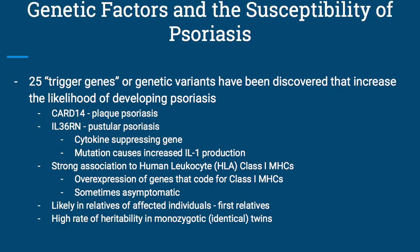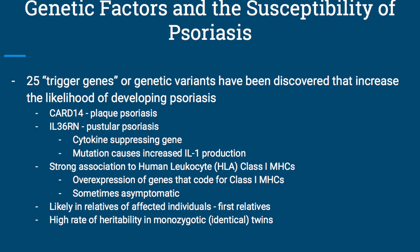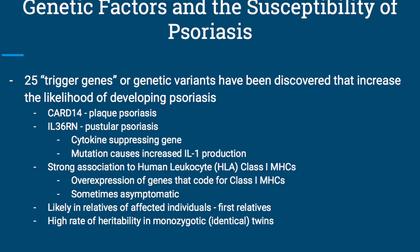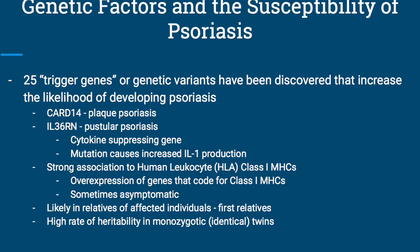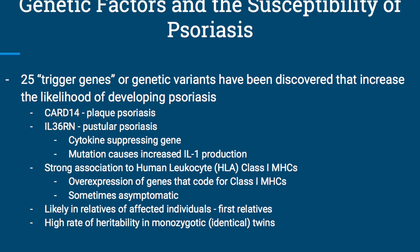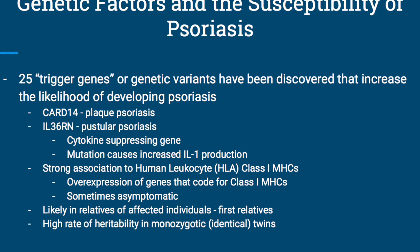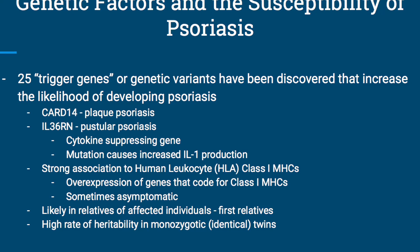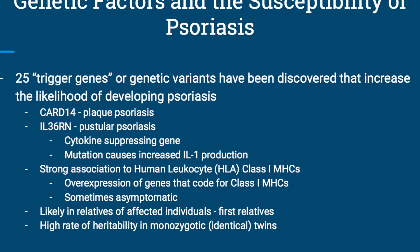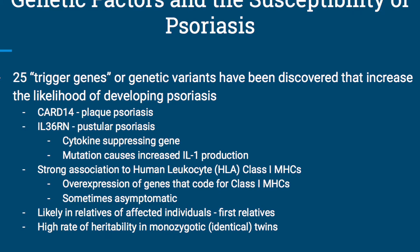The IL-36RN genetic variation tends to cause a mutation that increases the amount of interleukin-1 produced by preventing the production of a cytokine-suppressing gene. There's also a strong association to human leukocyte antigen 1-MHC. Overexpression of genes that code for class 1-MHC in these people often causes an increased susceptibility for psoriasis outbreaks.